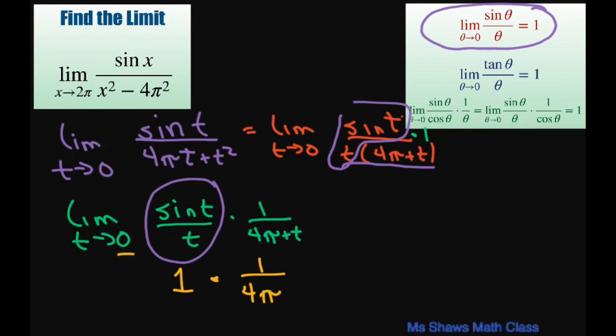When you substitute in the 0, you're going to get plus 0. So this is just going to equal 1 divided by 4π, and that is your limit.